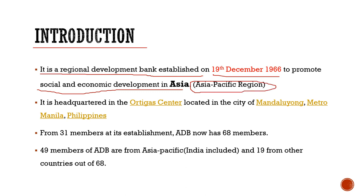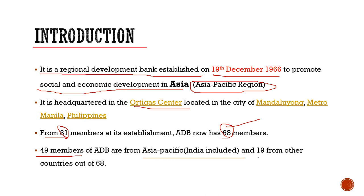It is headquartered in Ortigas Centre, which is located in Philippines. There are total 68 members now. Earlier when it was established, the members were 31, but now it is 68. Out of which, 49 members are from the Asia Pacific region, where India is also included, and the other 19 out of 68 are from other countries.